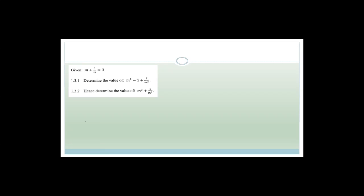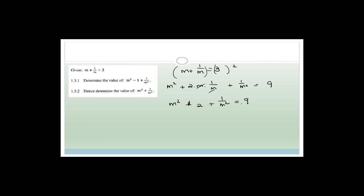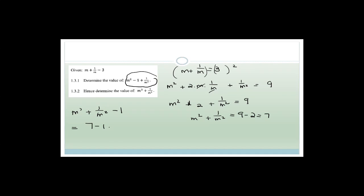Given m + 1/m = 3, determine the value of m² - 1 + 1/m². Squaring both sides: m² + 2·m·(1/m) + 1/m² = 9, which gives m² + 2 + 1/m² = 9. So m² + 1/m² = 7. Therefore m² + 1/m² - 1 = 7 - 1 = 6.